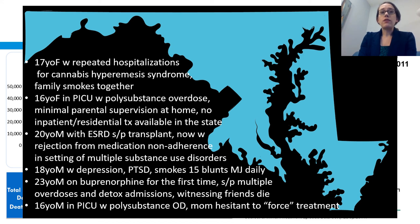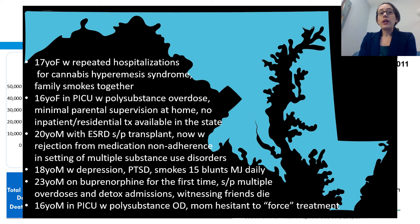I've seen a 17-year-old female who's had repeated hospitalizations for cannabis hyperemesis syndrome and the family really just smokes together. A 16-year-old female in the pediatric ICU with a polysubstance overdose — really no parental supervision at home and there's no inpatient or residential treatment available in the state of Maryland. A 20-year-old male with end-stage renal disease who's already had a kidney transplant but now has had rejection of that kidney from medication non-adherence in the setting of multiple substance use disorders. An 18-year-old male with depression and PTSD who's smoking 15 blunts of marijuana daily, not really doing too much else in terms of working or school.